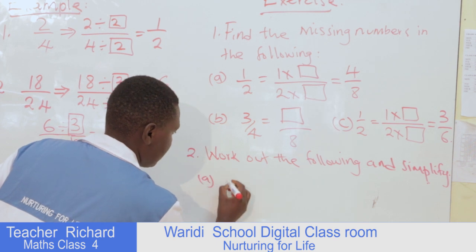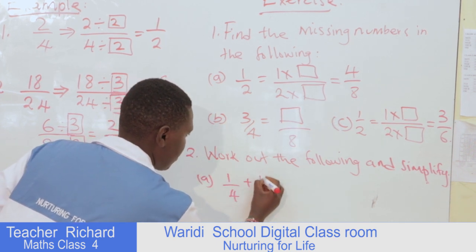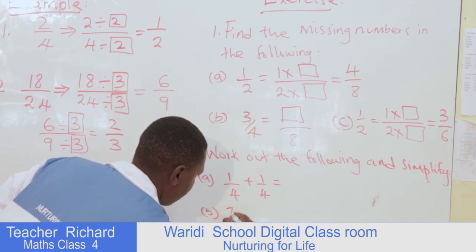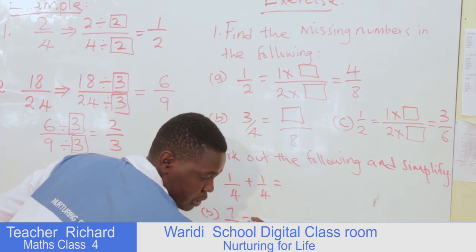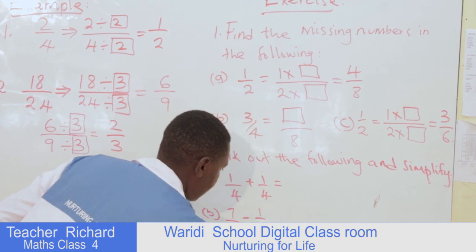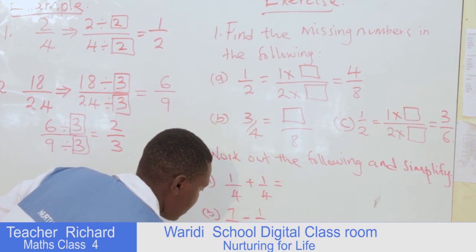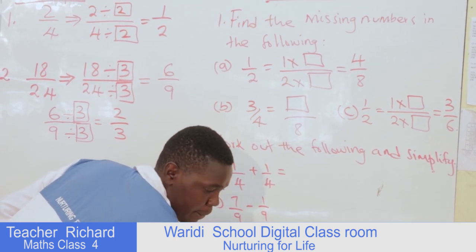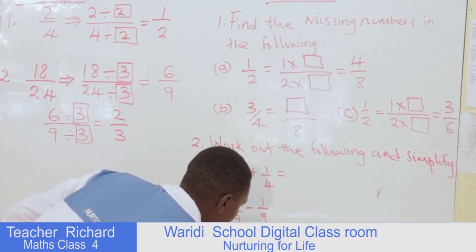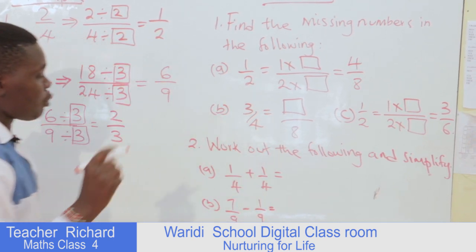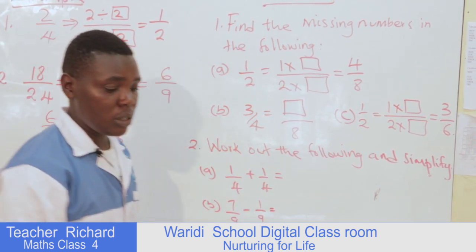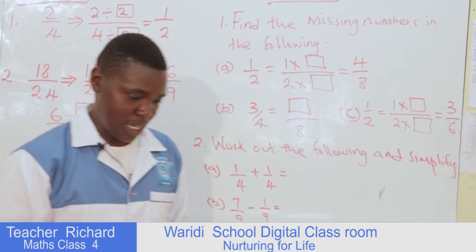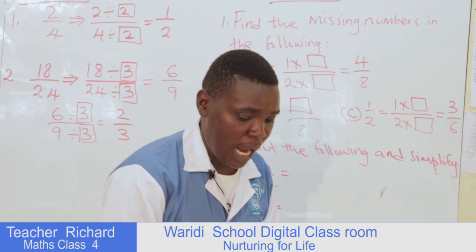Question one is one over four plus one over four. Question two is seven over nine minus one over nine. And the last one is four over fifteen minus two over fifteen. I'll come to mark as I come around at home, so make sure you are ready and have done that work. That marks the end of our lesson.